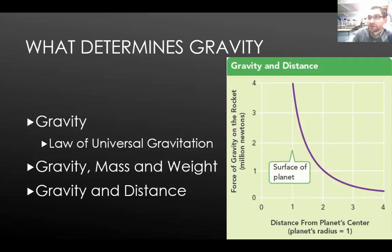This graph shows gravity and distance on a planet. The distance from the planet's center, where one would be the surface of the planet where you would stand, is related to the force of gravity on the planet measured in millions of newtons. We have a much higher force of gravity at the surface of the planet, and then as we move away from that planet, our force of gravity decreases.